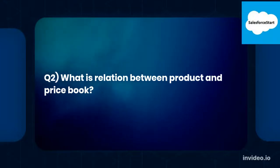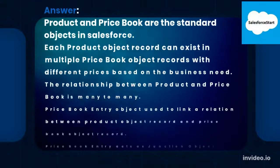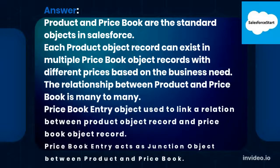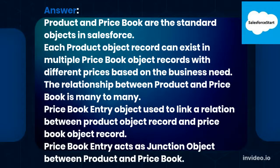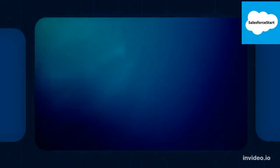Q2: What is the relation between Product and Price Book? Product and Price Book are standard objects in Salesforce. Each Product object record can exist in multiple Price Book object records with different prices based on business need. The relationship between Product and Price Book is many-to-many. The Price Book Entry object is used to link the relationship and acts as a junction object between Product and Price Book.